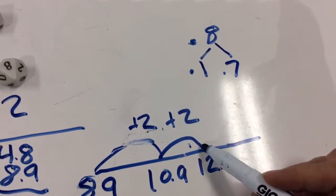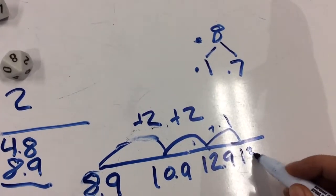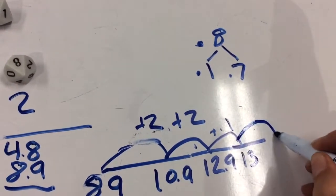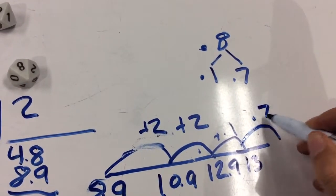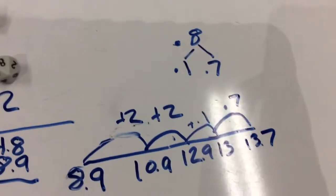So you would go plus 0.1, which would get you to 13. And then plus 0.7, which is 13.7.